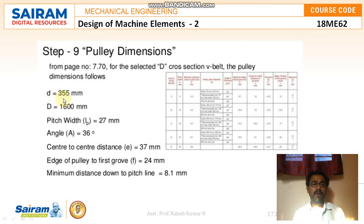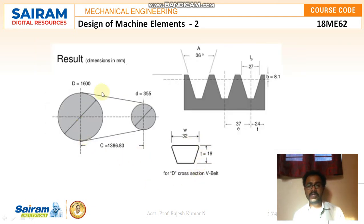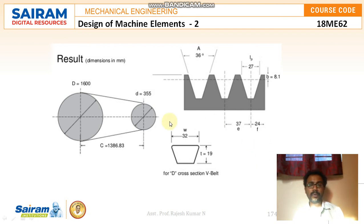The final answers for the D cross-section V-belt drive: small pulley d = 355 mm, large pulley D = 1600 mm, pitch width = 27 mm, groove angle = 36°, center-to-center distance of groove = 37 mm, edge of pulley = 24 mm, minimum depth below groove = 8.1 mm, and number of belts = 8. This is how both problems should be solved — even though explained quickly, if you pause and solve step by step, you can understand easily. Thank you.